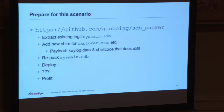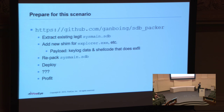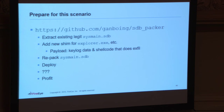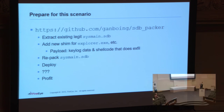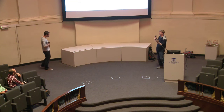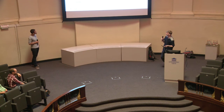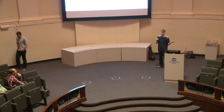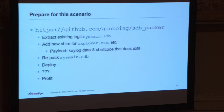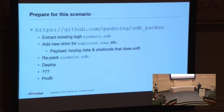There's a packer which actually pulls the XML for each of the shims and packs it into a database for you. If you took sysmain.sdb — which you can't normally access with the toolkit — you could parse out all the XML, repack it, and inject your own shim into sysmain.sdb. You could add a new shim for explorer.exe with your payload, some keylog data, shellcode — whatever you want — then repack sysmain.sdb and deploy it. Who's going to find it? It's a scary idea of what you can do with these things — they're pretty much unchecked.